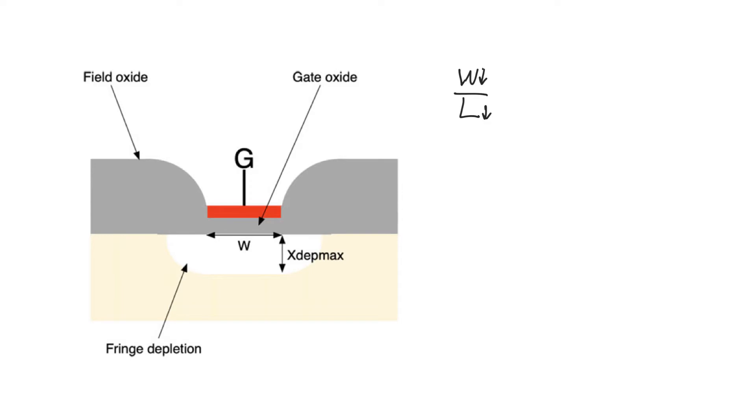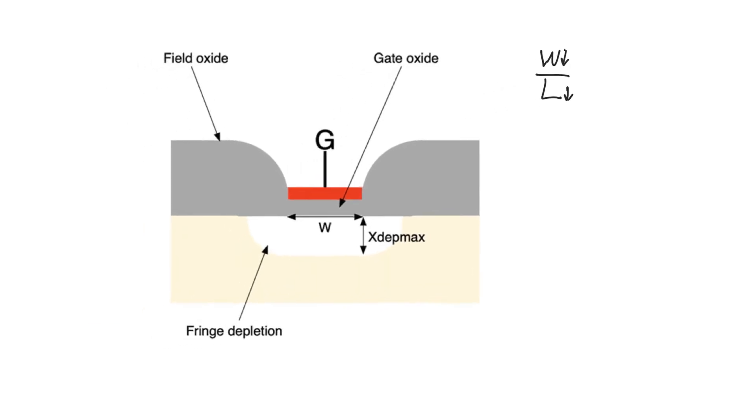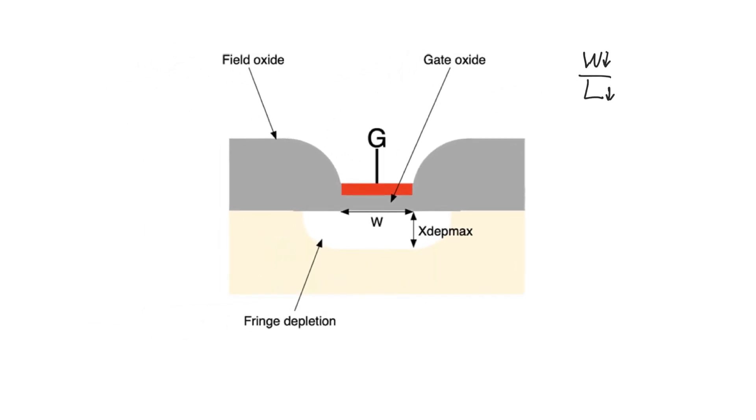But now with very deep scaling and even with high aspect ratios, W is also starting to become very small. So we are going to look at the narrow channel effect, which is similar to drain-induced barrier lowering in its impact, but a little bit different in where it comes from.